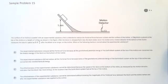The surface of an incline is coated with an experimental substance that is intended to reduce the frictional force between a block and the surface of the incline. A two kilogram block is placed at the top of the incline at a height of 1.8 meters, as shown in the figure. After the block is released from rest, the block slides down the incline and a motion detector at the bottom of the incline measures the block's speed at 5.8 meters per second. After the block is no longer on the incline, so that means immediately after it left the incline. Which of the following claims is correct about the experimental substance?